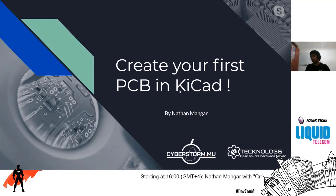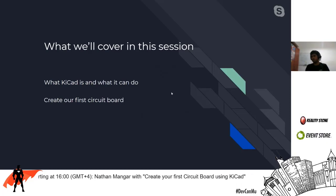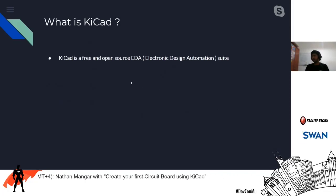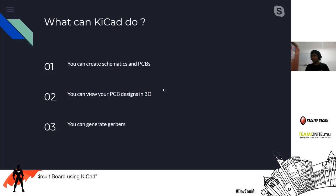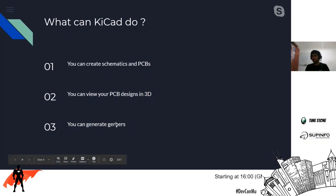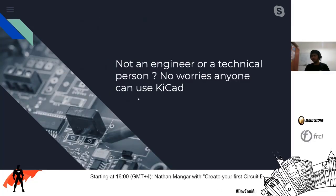In this session we'll be covering what KiCad is, what it can do, and we'll create our first circuit board. KiCad is a free and open source electronic design automation suite. With it you can create schematics, print circuit boards, view your PCB designs in 3D, and generate Gerber files — the files you need to give your PCB manufacturer in order to make your board. If you're not an engineer or technical person, no worries — anybody can use KiCad.